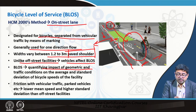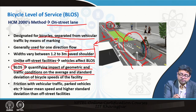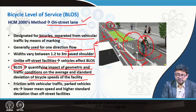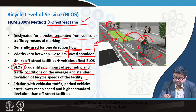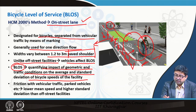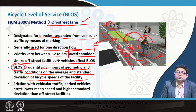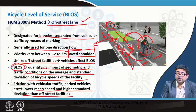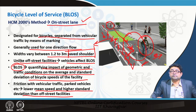Quantifying the impact involves geometric and traffic conditions on the average and standard deviation of bicycle speeds on the facility. Friction from vehicular traffic and parked vehicles also plays a role — for example, a parked car whose door is opened can hit a passing bicyclist, causing friction that lowers mean speed and raises the standard deviation of speeds observed in on-street bicycle lanes.